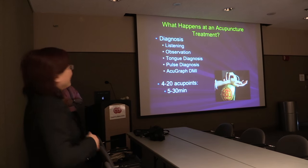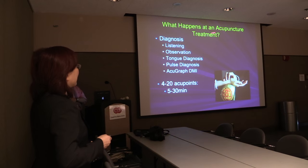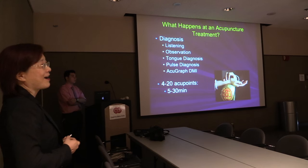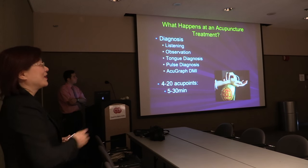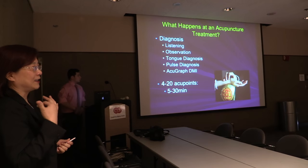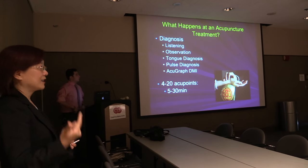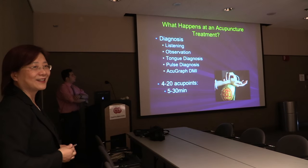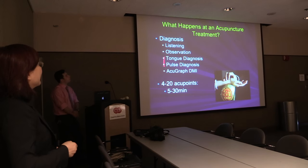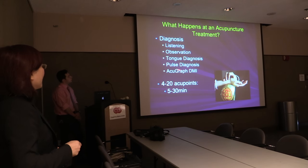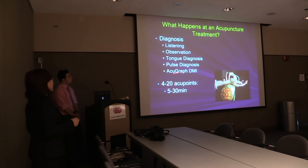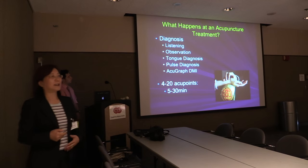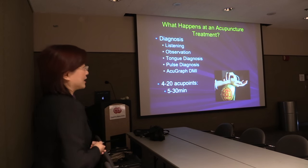What happens at an acupuncture treatment? We use a different diagnostic system than Western medical doctors. Unlike Western medicine which uses EKG, CT scan, and MRI, we use tongue diagnosis, pulse diagnosis, and the AcuGraph Digital Meridian Imaging to give the patient a diagnosis and treatment plan.